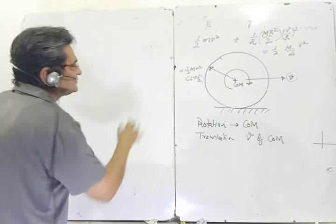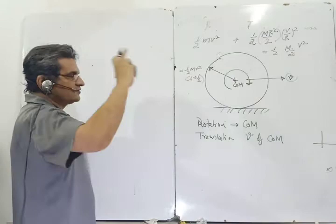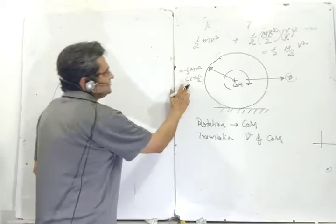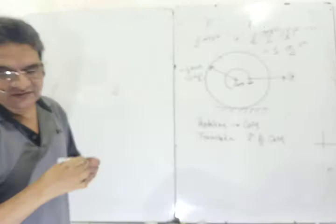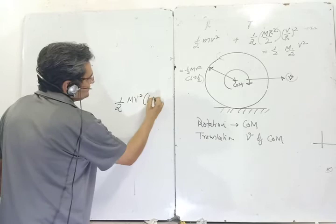When writing kinetic energy for combined rotational and translational motion, don't get confused about which velocity to use — take only the velocity of the center of mass and rotation about the center of mass. To avoid calculation mistakes in exams, use the combined formula: KE = ½mv²(1 + C), where C is the coefficient in the moment of inertia expression.